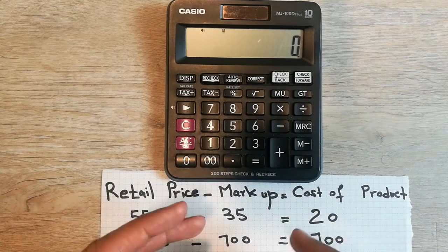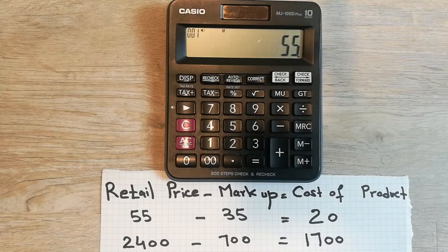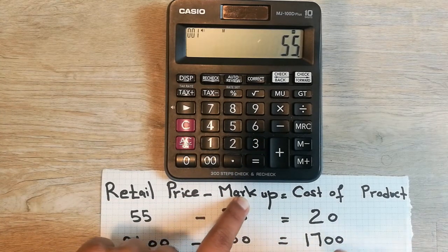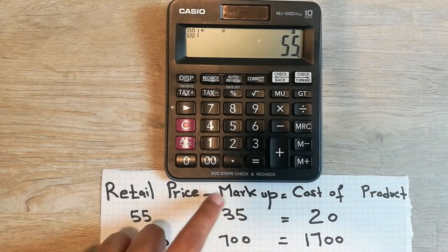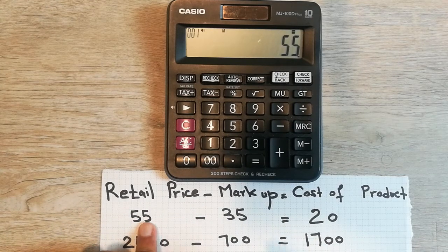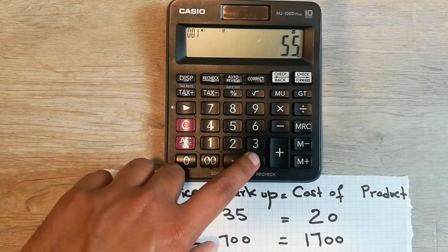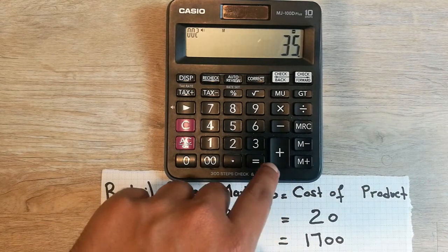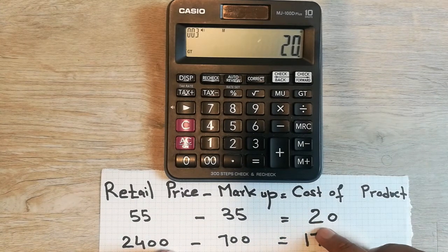So how do we calculate it? Let's say the retail price of an item that a customer sees at the shopkeeper is 55. Then we minus the markup. The markup is like operational cost plus the profit you want to make on a product. So 55 minus markup of 35 — the answer will be 20 dollars, or whatever currency you use. So 20 is the cost of the product.